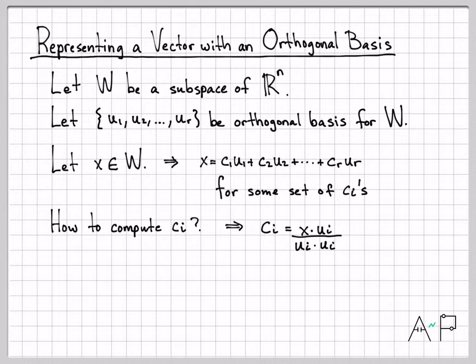Here is the equation. To figure out what each of the coefficients is, I just compute c_i as x dotted with u_i and then normalized by u_i dot u_i.